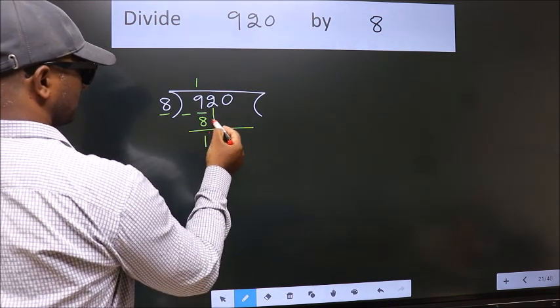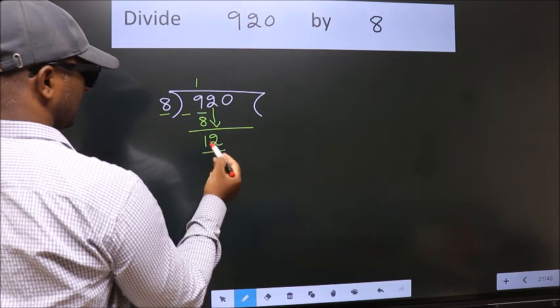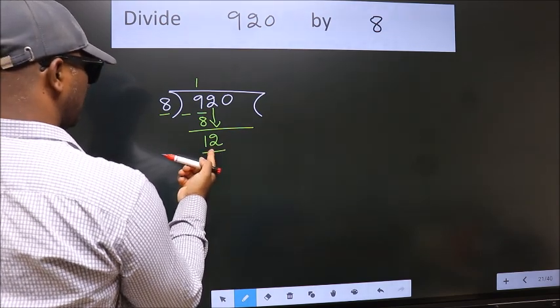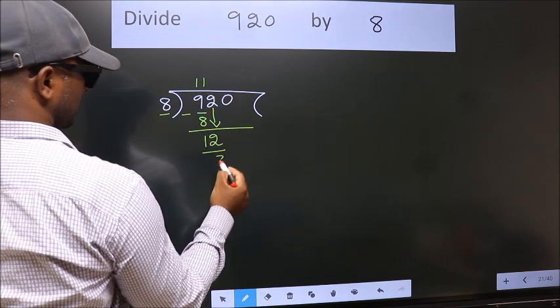After this, bring down the beside number. So 2 down. So 12. A number close to 12 in 8 table is 8 once 8.